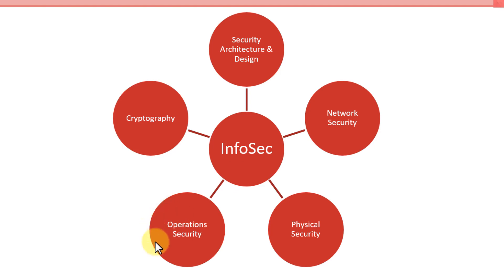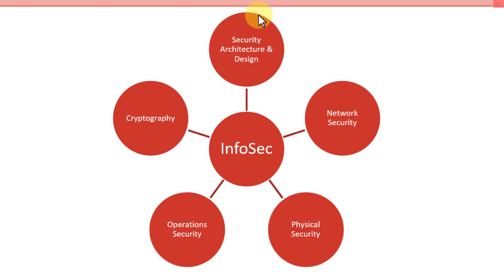Security operations and network operations kind of go hand in hand. When we talk about things such as our firewalls, our IDSs, our IPSs, honeypots and honeynets, and our computer incident response team — network security and security operations both play a role in that. In regards to network security, it also plays a role in the architectural design to make sure we design it in a secure fashion.